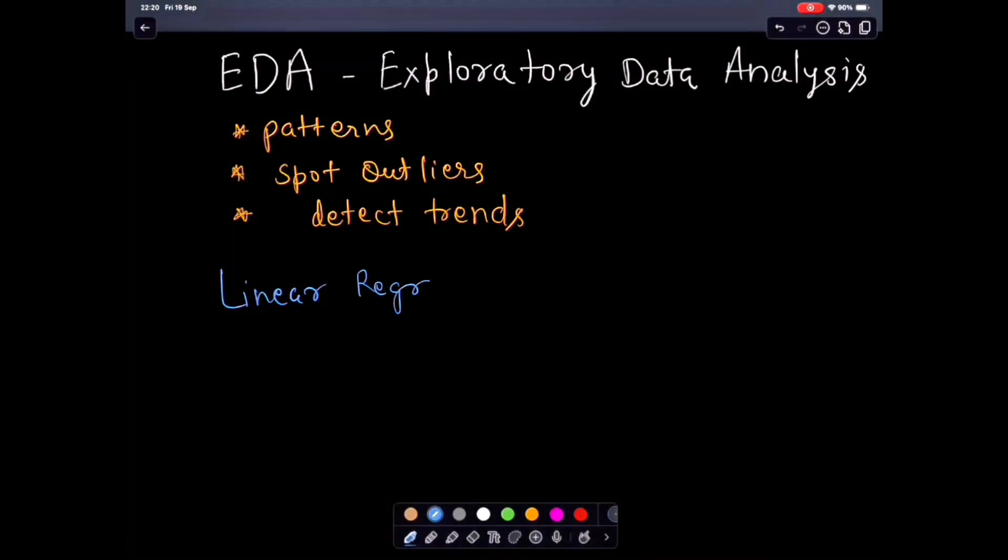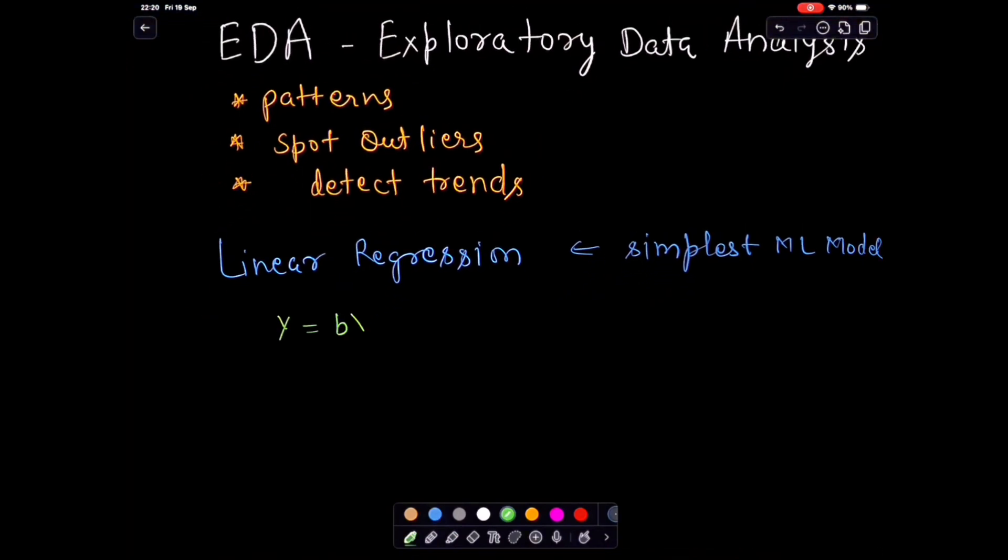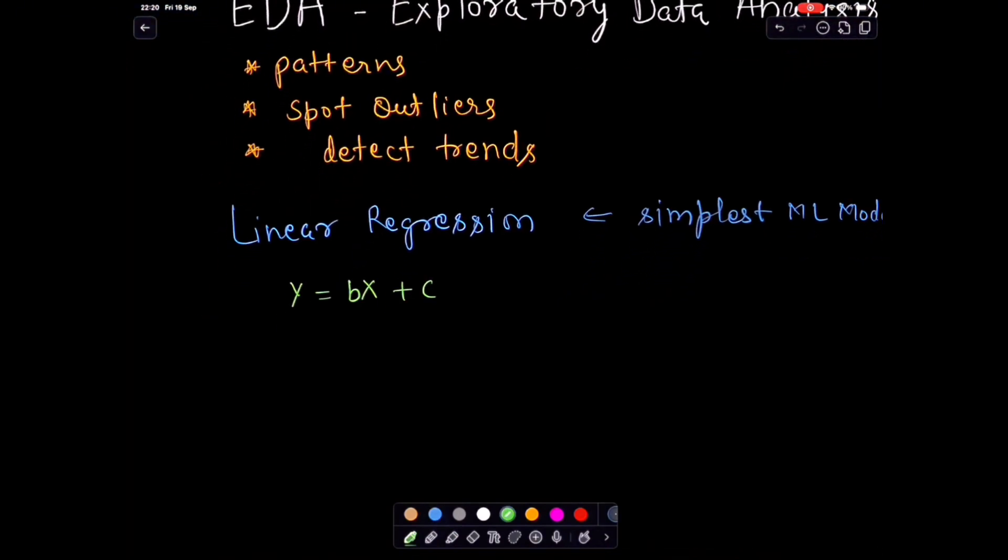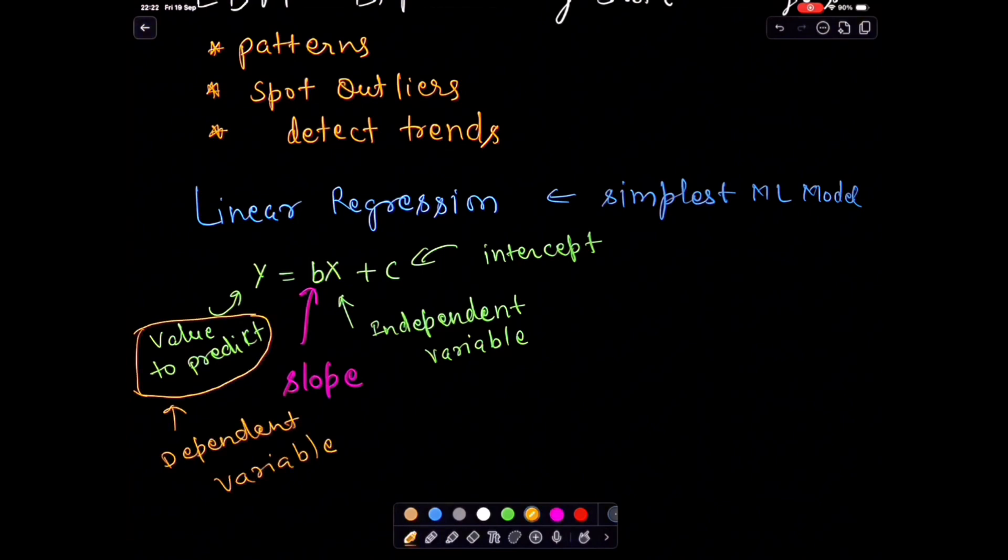Remember our linear regression equation from earlier videos. The basic equation looks like this: Y equals to BX plus C. Here is what that means. Y is the thing we are trying to predict, called the dependent variable. X is what we are using to make that prediction, called the independent variable. B is how much Y changes when X changes, called the slope. C is the starting point when X is 0, which is the intercept.